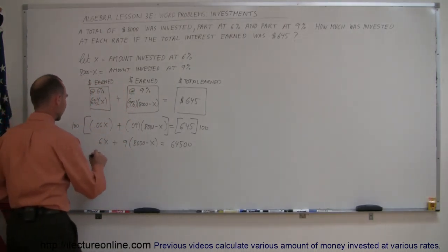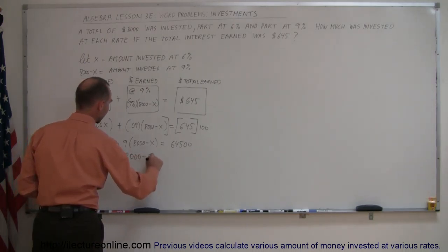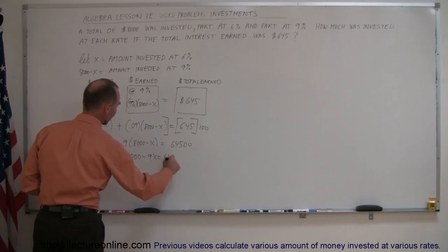Getting rid of the parentheses, 6X plus 72,000 minus 9X equals 64,500.